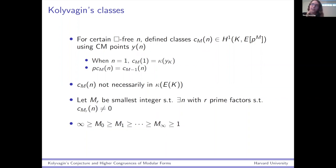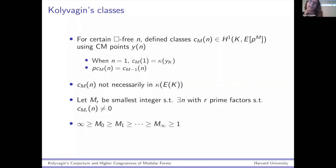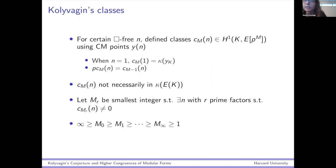Kolyvagin defined these integers M_r: M_r is the smallest number so that there exists an N with r prime factors with CM_r(N) non-zero. As you add primes into N, it gets easier and easier for your classes to not vanish. So these M_r are a decreasing sequence — they could be infinite; it could be that all of the classes vanish. But once you get one thing that doesn't vanish, as you add in more primes, that just vanishes less and less.